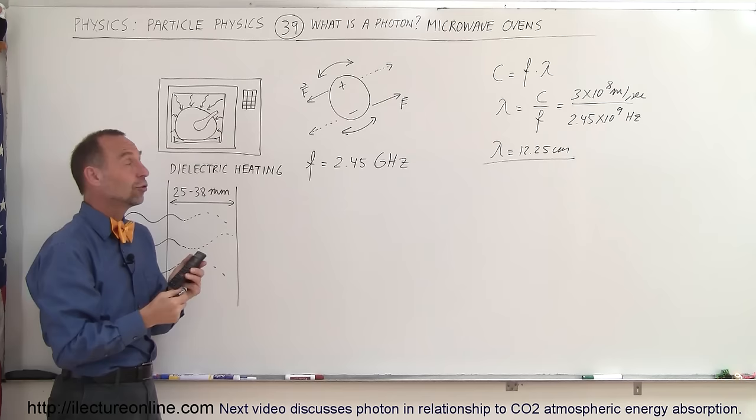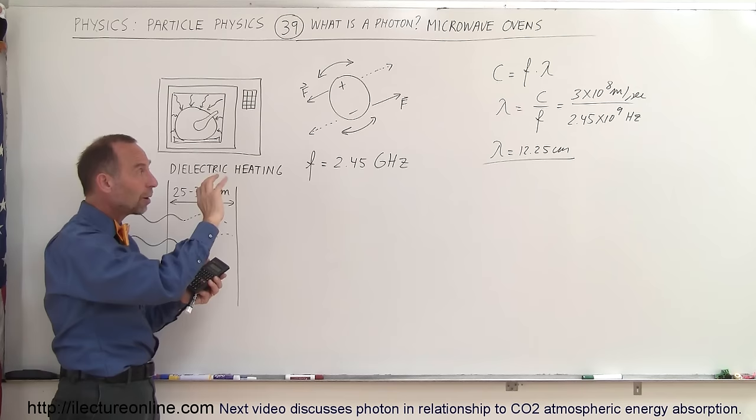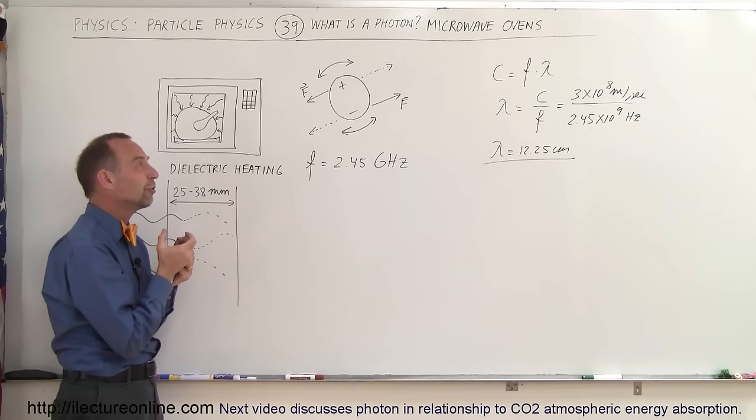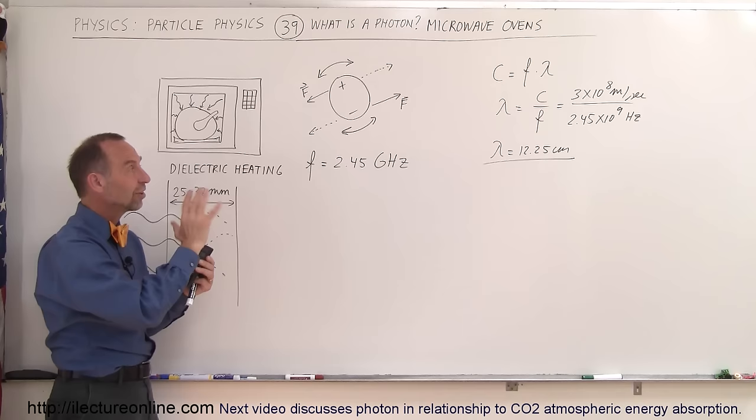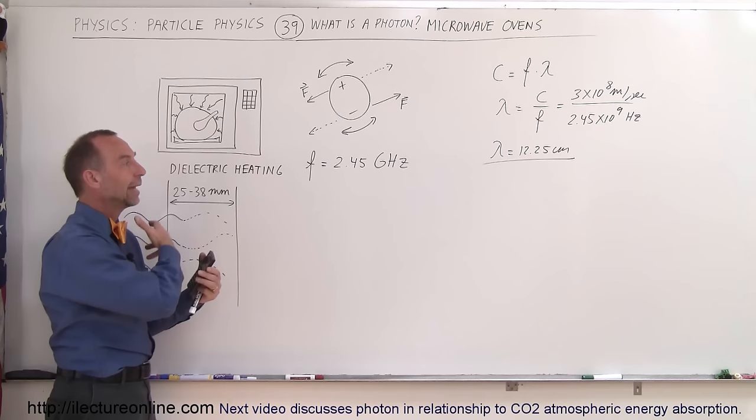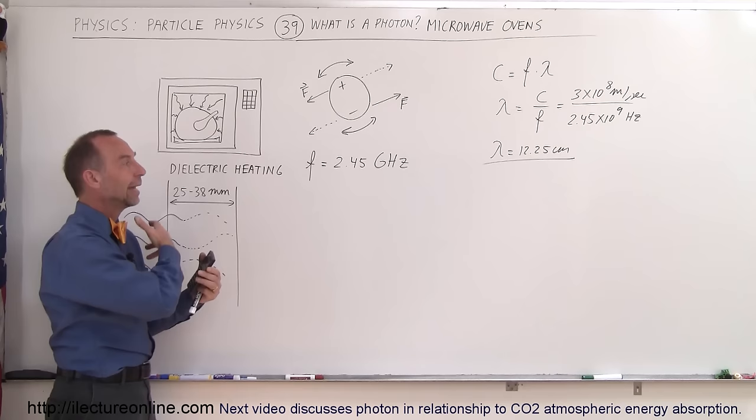The photon comes in and starts pulling on that water molecule. As the water molecule starts vibrating back and forth, it absorbs the energy of the photon and that's how the heating process takes place. Again, it's due to the quantized nature of photons that the photons are absorbed one by one as they cause the oscillation to occur inside the food. As the oscillation begins to really build up as photons are being imparted into the food, the food will heat up and that's how energy transfers from the microwaves into the food.